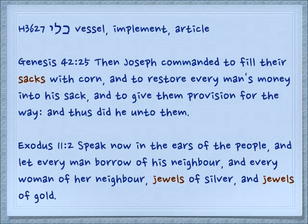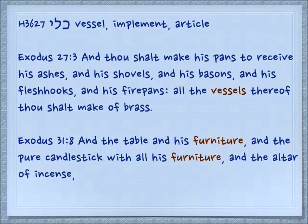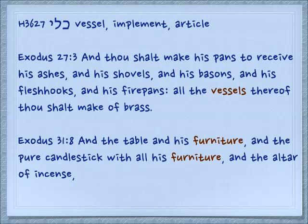Exodus 11:2: 'Speak now in the ears of the people, and let every man borrow of his neighbor and every woman of her neighbor jewels of silver and jewels of gold' — a plain meaning of article. When we talk about the implements in the tabernacle we see this word kilim used often. Exodus 27:3: 'And thou shalt make his pans to receive his ashes, his shovels and his basins, and his flesh hooks and his fire pans — all the vessels thereof thou shalt make of brass.'